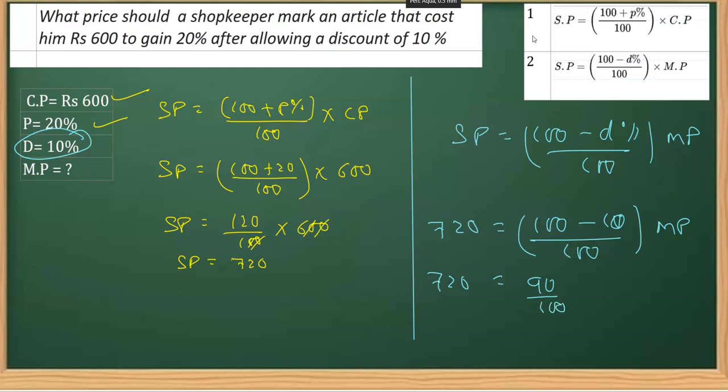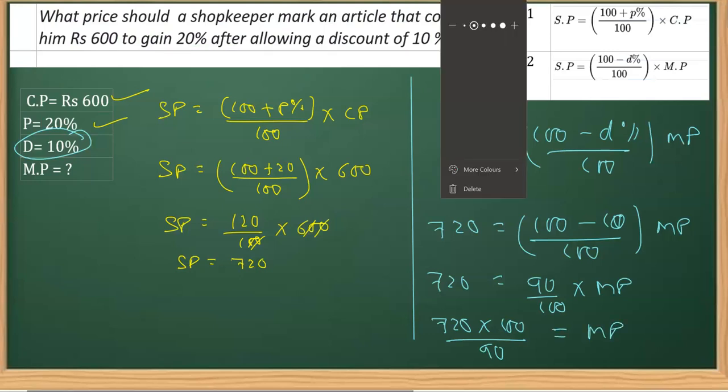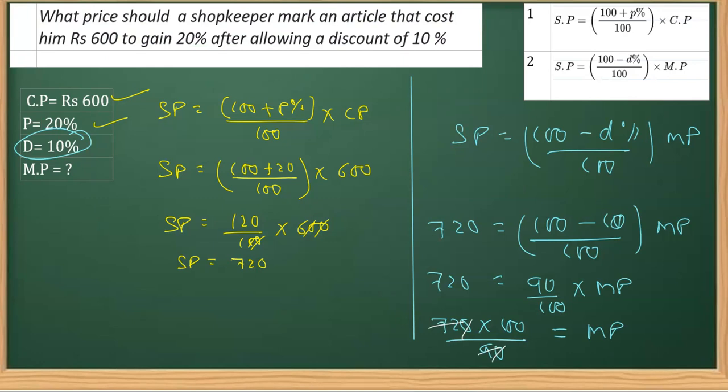If I transpose these values on the other side, it is 100 multiplied and 90 divided is equal to mark price. Now we can reduce this. As you can see here, these zeros get canceled and 72 is divisible, right? We'll divide 72, you know that it is 8 times. So finally we got this mark price as 8 into 100 is equal to rupees 800.